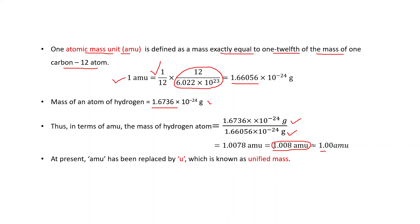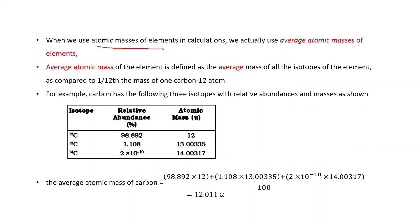For general use we use AMU, but at present AMU has been replaced by U, which is known as unified mass. When we use atomic masses of elements in calculations, we actually use average atomic masses. The average atomic mass of an element is defined as the average mass of all the isotopes of the element as compared to one-twelfth the mass of one carbon-12 atom.